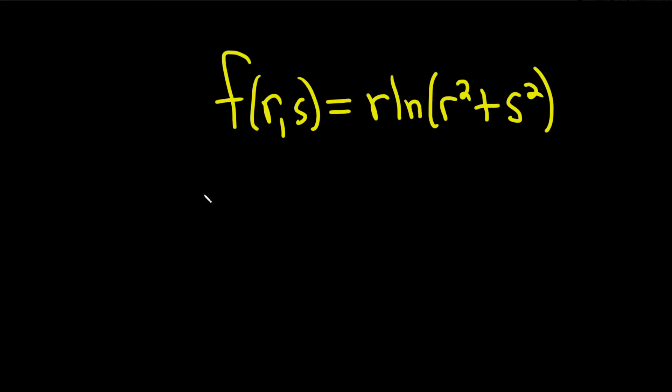We have a function of two variables, and we're going to find the partial derivative of this function, so del f with respect to s, so del s.